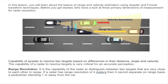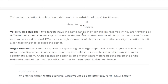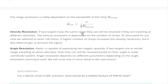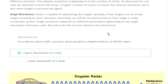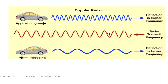I want to talk about radar resolution: angle resolution, range resolution, and velocity resolution. Range resolution is the capability to distinguish between two targets that are very close to each other in range. Velocity resolution means if two targets have the same range, they can still be resolved if they are traveling at different velocities. Angle resolution means if two targets are at similar range traveling at the same velocity, they can still be resolved based on their angle in the radar coordinate system.